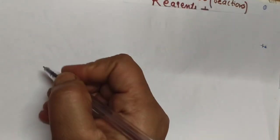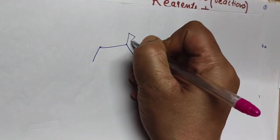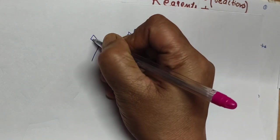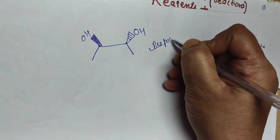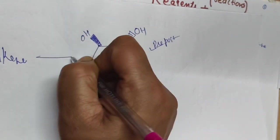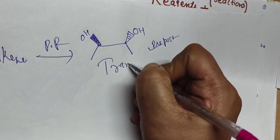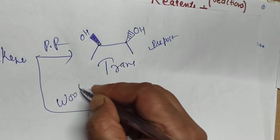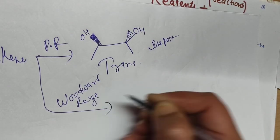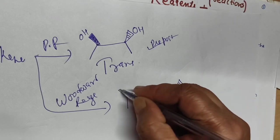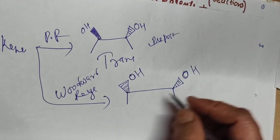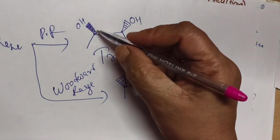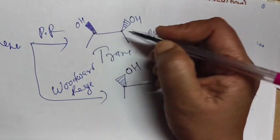One more important thing regarding the Prévost and Woodward reagents: in the case of Prévost, you will get the product as trans-diols. In the case of Woodward, you will get cis-diols. So any alkene converted in the presence of Prévost reagent gives the trans product, and any alkene converted in the presence of Woodward reagent gives cis-diols. When both OH groups are on the same side, that is cis-diols; when they are on opposite sides, those are trans-diols.